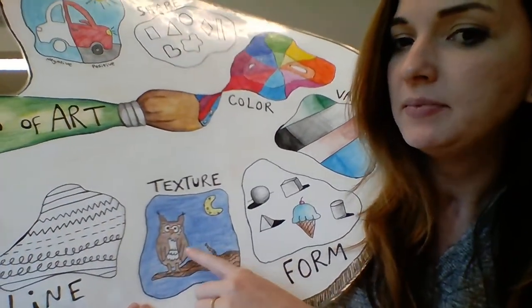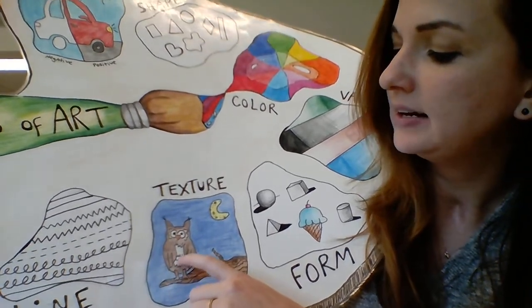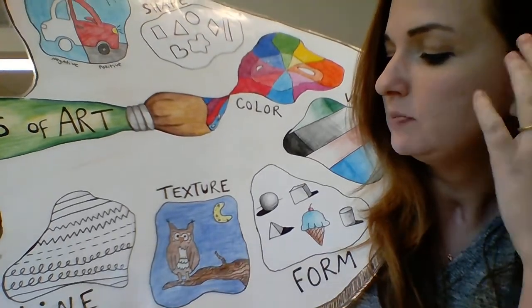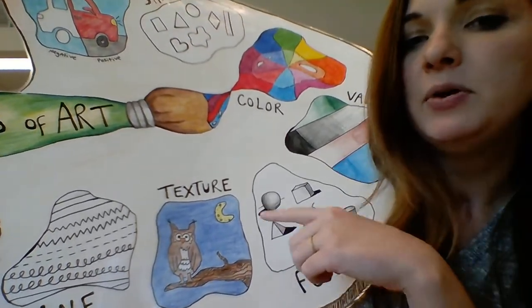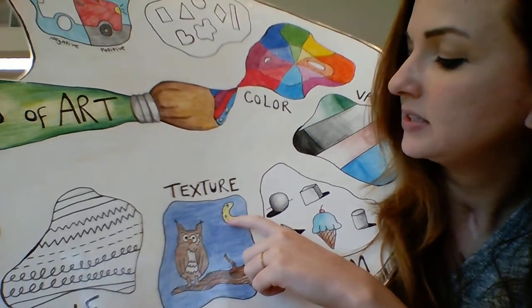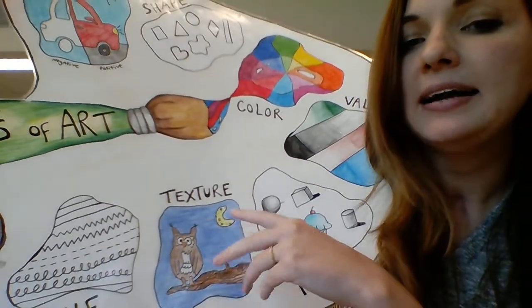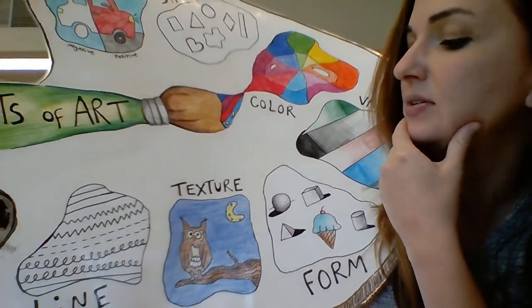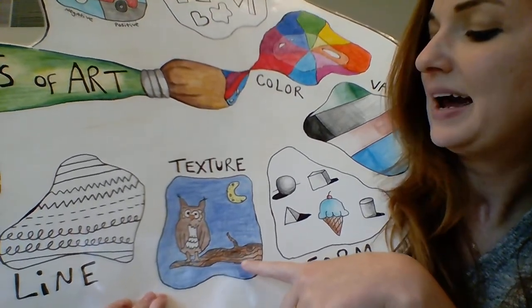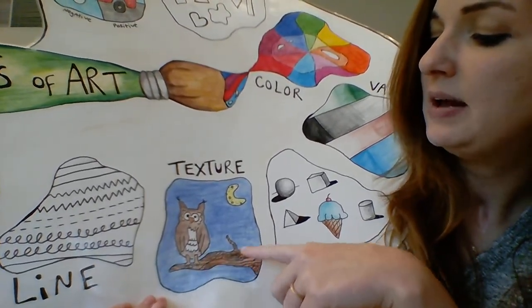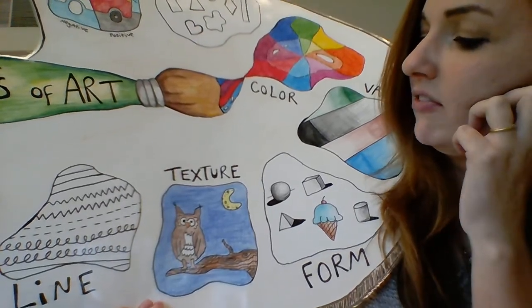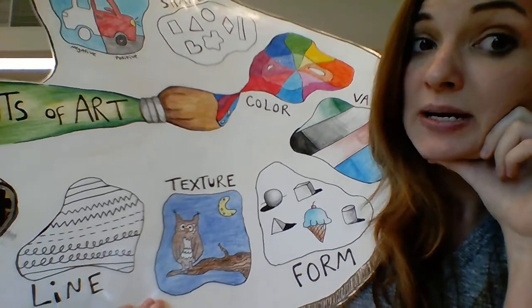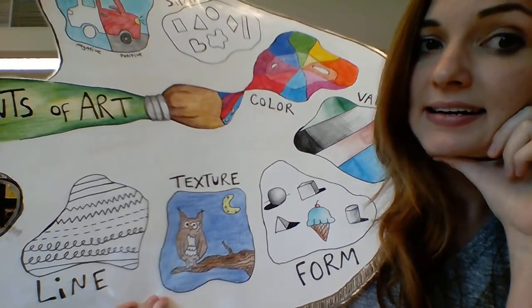For my owl here, I've given him some little scoop lines to make it look like he's got feathers — so it looks like if you reached out and touched him, he would be soft and feathery. On the moon, I've given little dots — those little craters — to show the craters in the moon. You're adding extra lines and things to build that texture up. For the tree bark, I did some lines to make it look rough and bumpy. That is line and texture, and that's what we're going to be focusing on today.